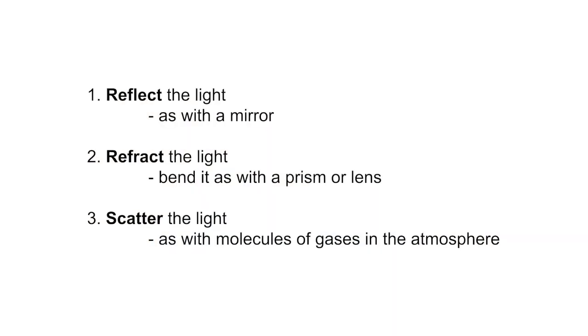We know that light travels strictly in a straight line, unless something gets in the way and interrupts this beam of light. That something will do one of the following: it will either reflect light, as it happens with a mirror; it will refract the light — which means bend it — as with a prism or lens; or it will scatter it, as with molecules of gases in the atmosphere.